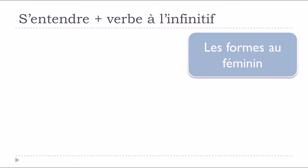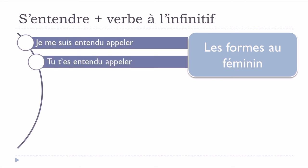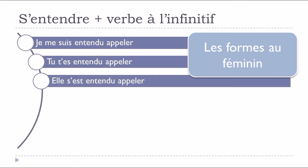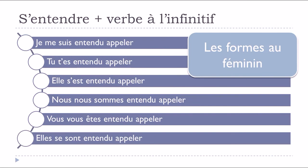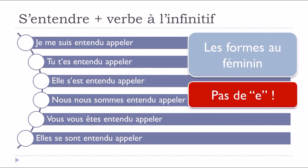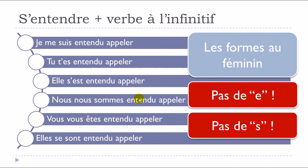For the feminine form: je me suis entendu appeler, tu t'es entendu appeler, elle s'est entendu appeler, nous nous sommes entendu appeler, vous vous êtes entendu appeler, elles se sont entendu appeler. It's exactly the same situation — you don't add the feminine -e at the end of the participe passé, and you don't add the plural -s either. These are the only tricky things to keep in mind.